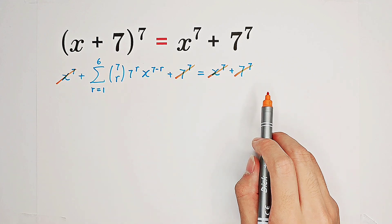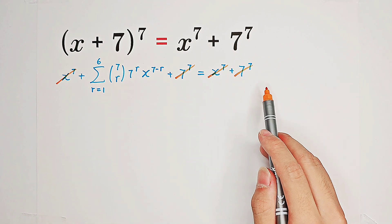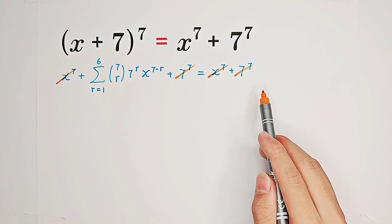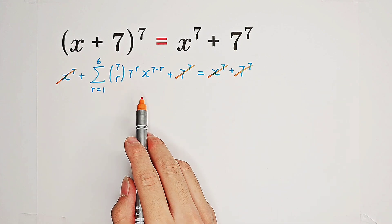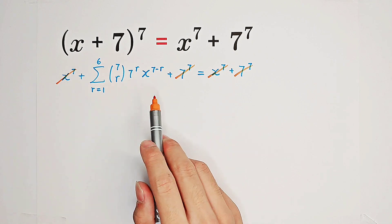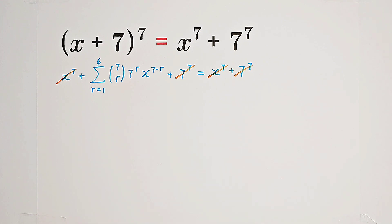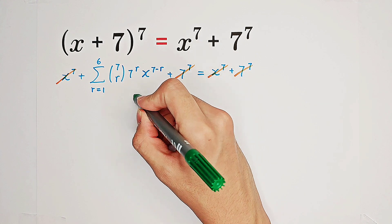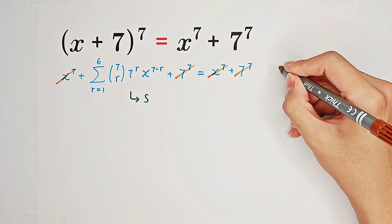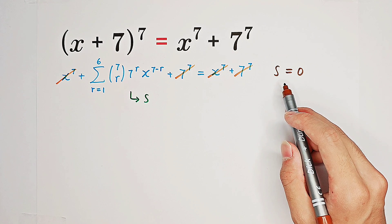Of course, it looks very complicated. However, I have a trick. I'm going to rename this sum as S. So we have to solve the equation S equals 0, where S is a polynomial in x with large coefficients.